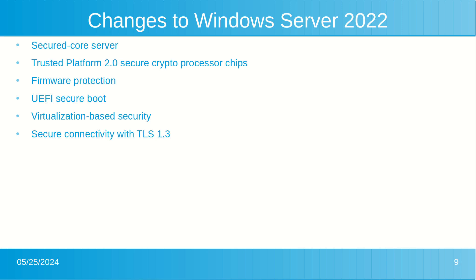Secure connections are the most important thing we need today to keep business continuity, and Transport Layer Security, or TLS 1.3, is the latest version of the internet's most deployed security protocol. This encrypts data to provide a secure communication channel between two or more computers. HTTPS and TLS 1.3 are now enabled by default on Windows Server 2022.